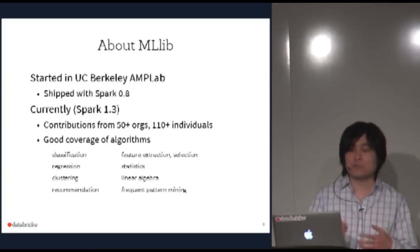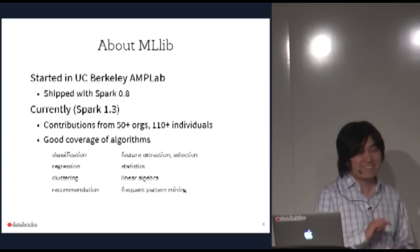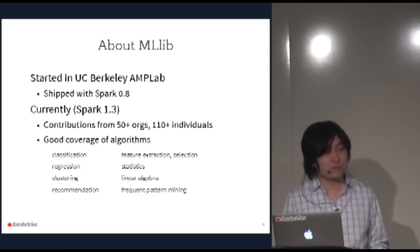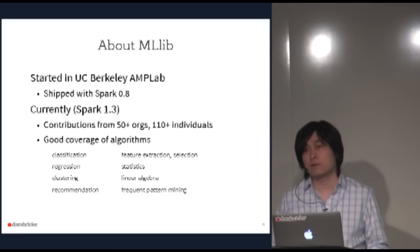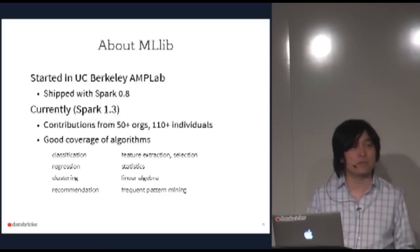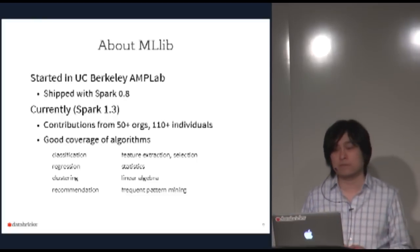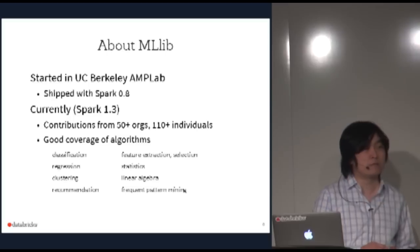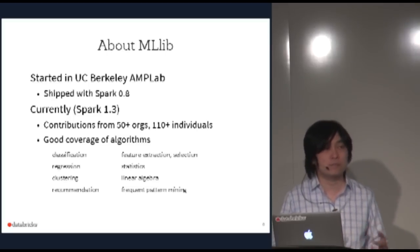The contributor count is increasing really fast. We have good coverage of algorithms: classification, regression, clustering, recommendation — essentially the table of contents of a machine learning textbook. We also have infrastructure and utilities like feature transformation, feature extraction, statistics, linear algebra, and data mining tools.